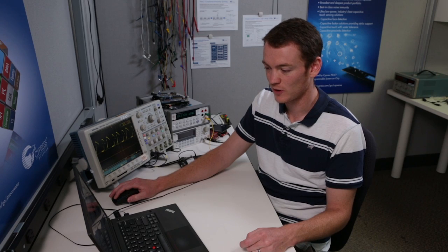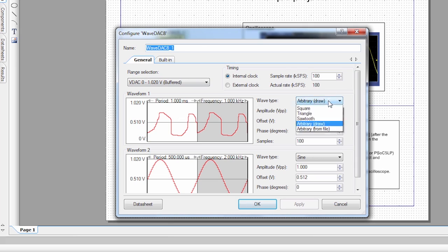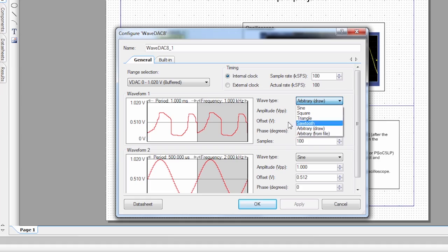Some other things that you can do with the WaveDAC is you can bring in an arbitrary waveform from a file. So, if you wanted to create your own waveform, say in Excel, you could import that in to this component. You can set up its amplitude and its offset. Those only work if you're doing the sine wave. And you can also have two outputs, if you wanted to have a second output.